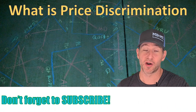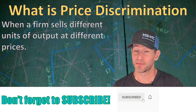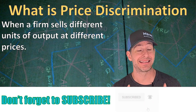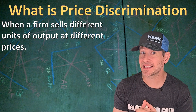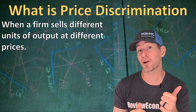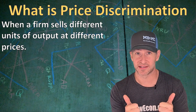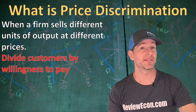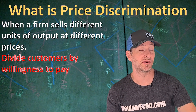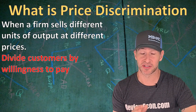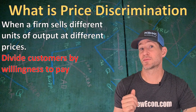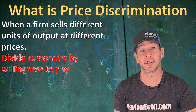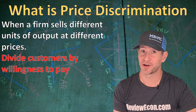First of all, we need to know what price discrimination is. Price discrimination is when a firm sells different units of output at different prices. That means it's the same product but it's being sold at one price for some consumers and other prices to other consumers. In order to be able to price discriminate, the first thing a business must be able to do is divide its customers by willingness to pay. Customers who have a higher willingness to pay will get charged higher prices, and customers with a lower willingness to pay pay lower prices.